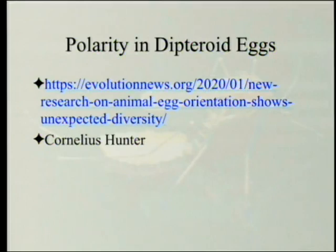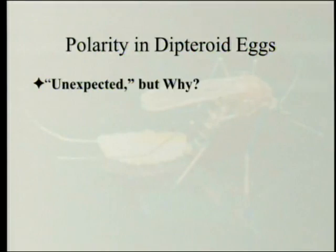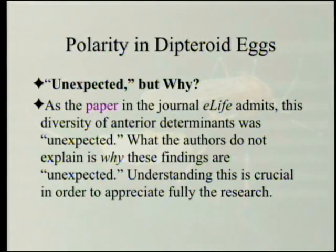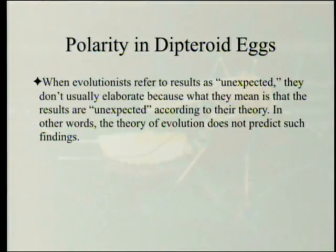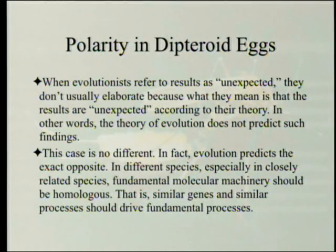Now for some comments from Cornelius Hunter. As the paper in eLife admits, this diversity of anterior determinants was unexpected. What the authors do not explain is why these findings are unexpected — understanding this is crucial. When evolutionists refer to results as unexpected, they don't usually elaborate because what they mean is that results are unexpected according to their theory. In other words, the theory of evolution does not predict such findings. In fact, evolution predicts the exact opposite.